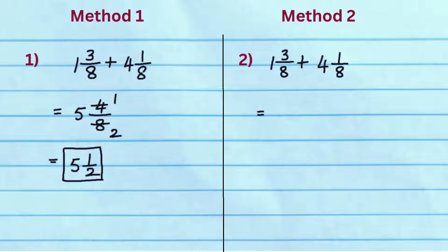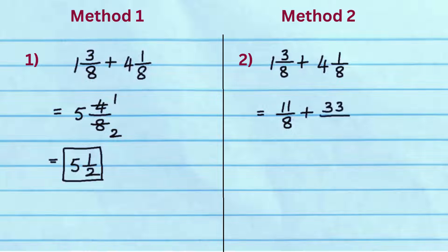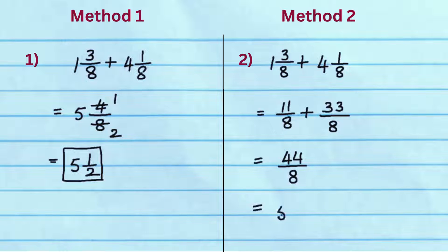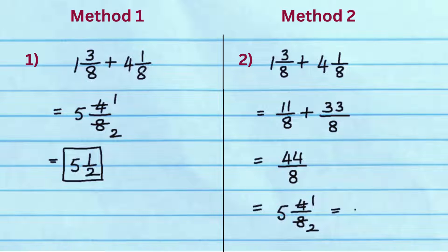In method 2, first convert the mixed fractions to improper fractions. Change 1 and 3 eighths to 11 by 8, and 4 and 1 eighths to 33 by 8. Add the numerators 11 and 33 to get 44, and keep the denominator as 8. Since 44 by 8 is an improper fraction, reduce it to get 5 and 4 eighths. Fraction 4 by 8 can be reduced to 1 by 2. We get the answer 5 and 1 half.